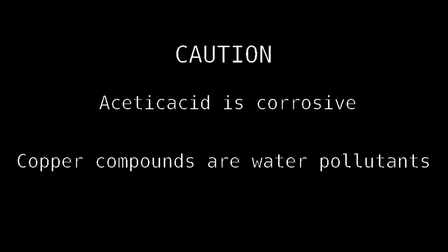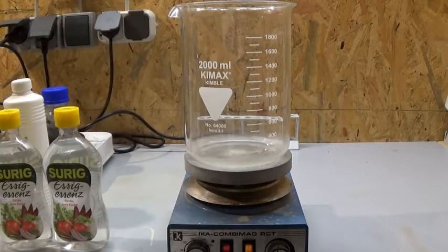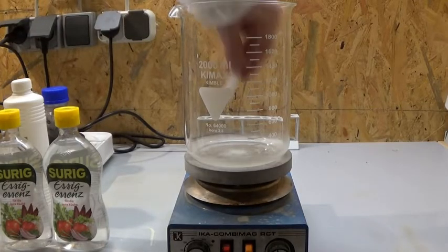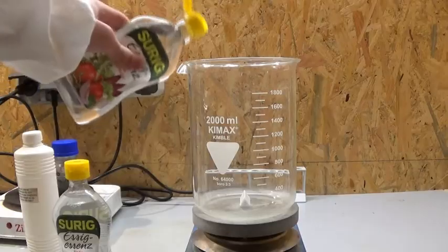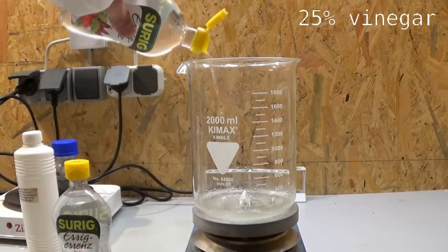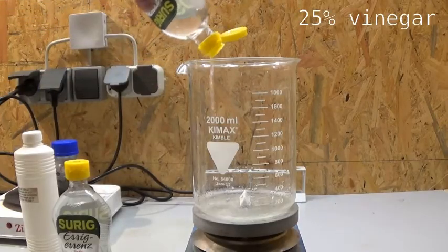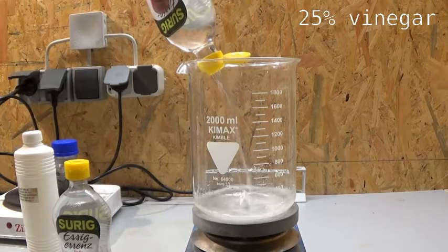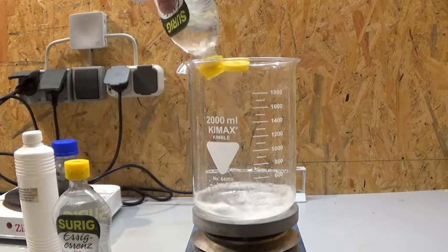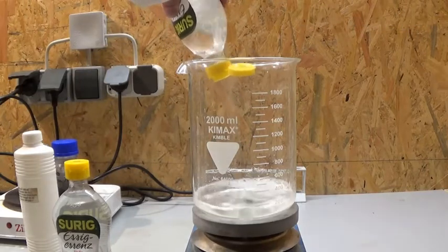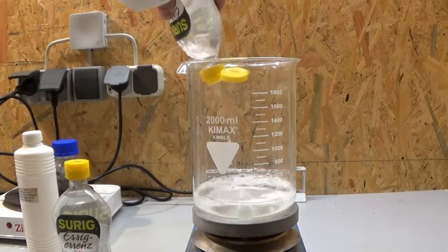Hello everybody. Today I will do the first step of my big scale lead 2 acetate synthesis, starting from calcium carbonate and acetic acid. Pay attention because acetic acid is corrosive. I am starting with 25% household vinegar as a cheap acetic acid source, then I add an arbitrary amount to my 2 liter beaker and put a magnetic stir bar in it.